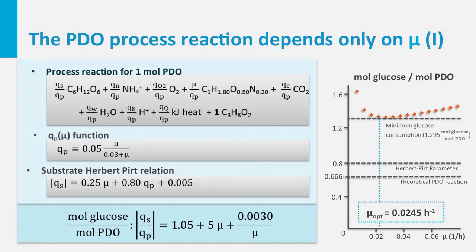The ratio substrate over PDO has a minimum at mu_optimum = 0.0245 h⁻¹, and the value is then 1.295 mol glucose per mol PDO. This value is higher than the value of 0.80 seen in the Herbert-Pert relation, because glucose is not only used for PDO but is also used for growth and maintenance.